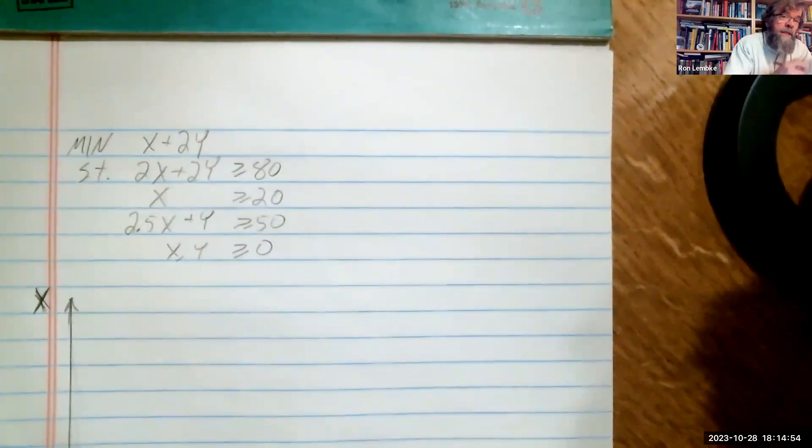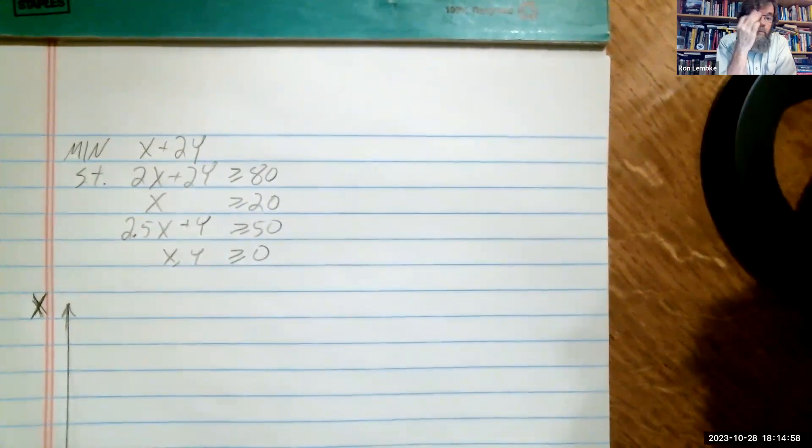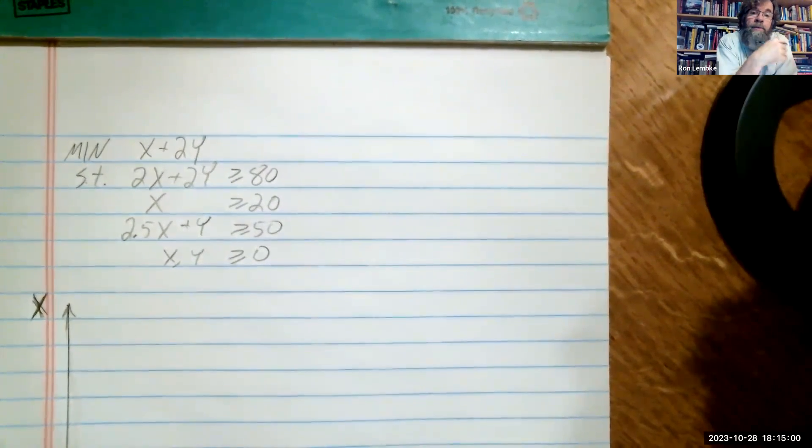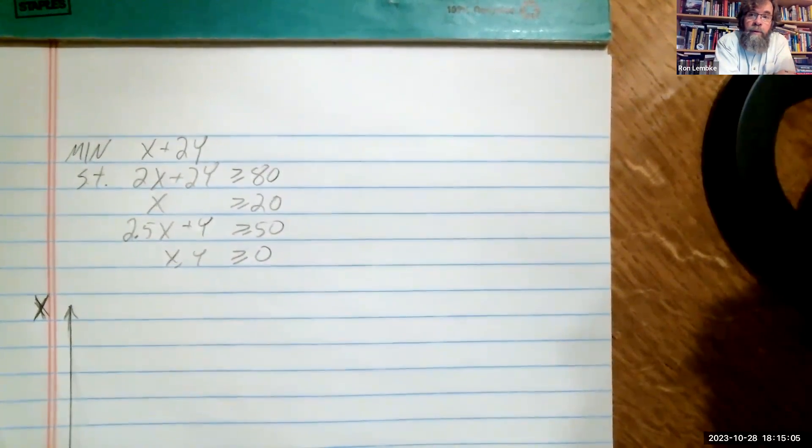So the first thing we need to do is find the endpoints for the constraints that we're going to draw lines to represent each constraint. And then we have non-negativity, x and y greater than or equal to 0.